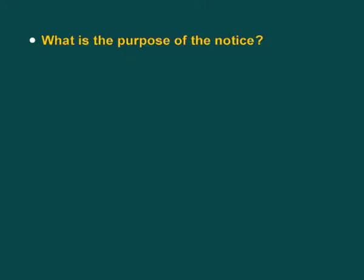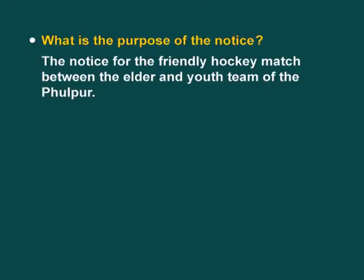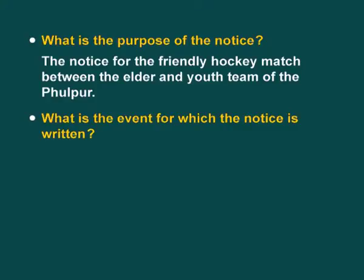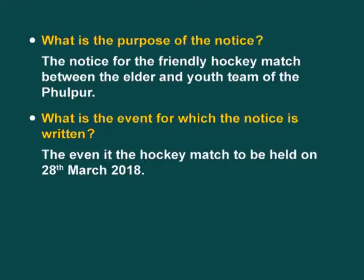Now I will give you time to think and answer. Let us start. Question one: what is the purpose of the notice? The answer is, the notice is for the friendly hockey match between the elder and youth team of Fulpur. The second question: what is the event for which the notice is written? Simple answer — the event is the hockey match to be held on 28th March 2018. Moving on to the next question: to whom is the notice addressed to? The notice is addressed to all the people of Fulpur. When is the event taking place? On 28th March 2018 at 4 p.m.